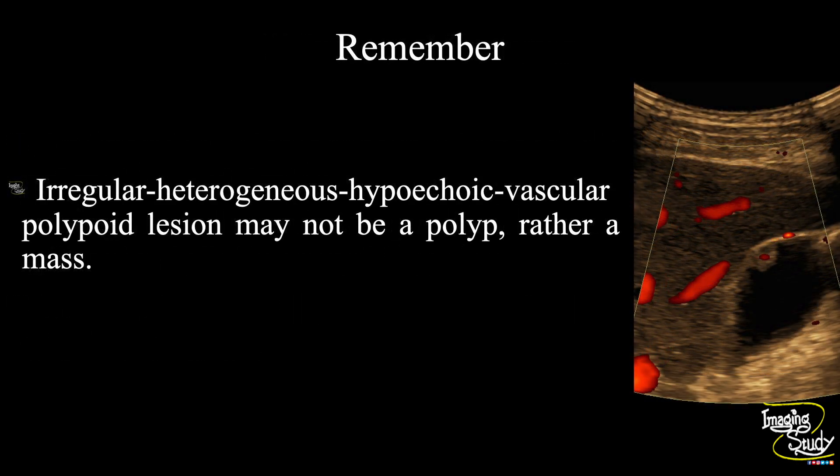Now the take-home message: an irregular, heterogeneous, hypoechoic, and vascular polypoid lesion may not be a polyp — rather, it is a mass.